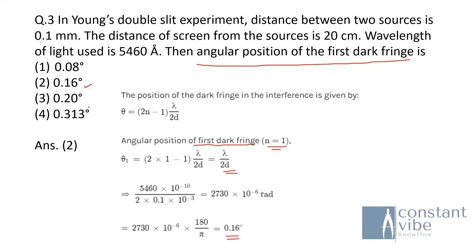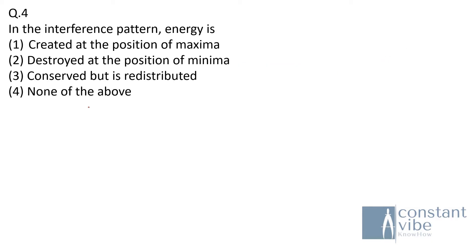Next is question number 4: In the interference pattern, energy is — (1) created at the position of maxima, (2) destroyed at the position of minima, (3) conserved but redistributed, or (4) none of the above. The answer is option 3: conserved but redistributed.